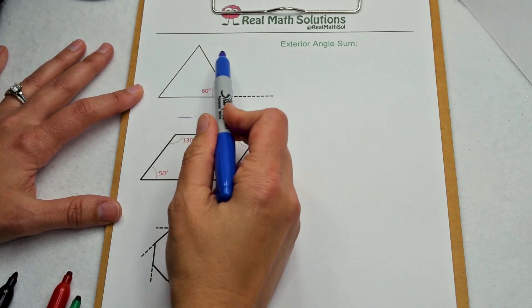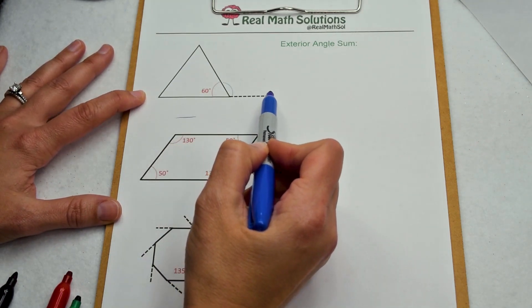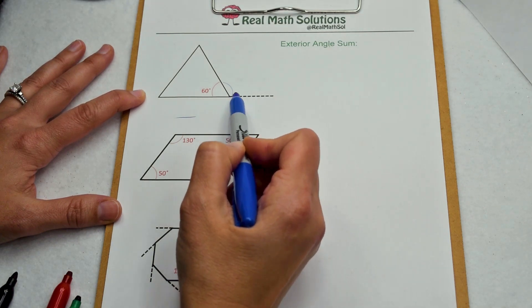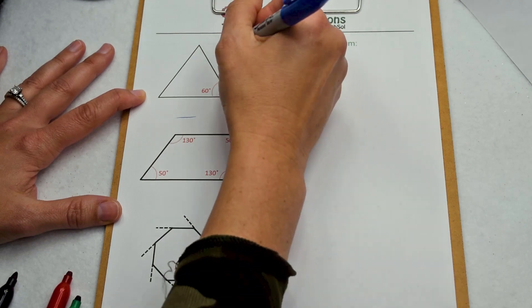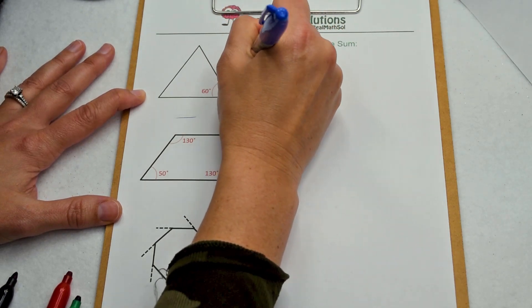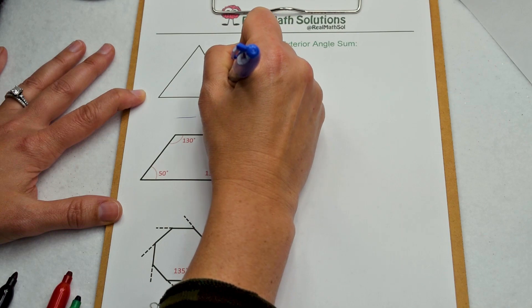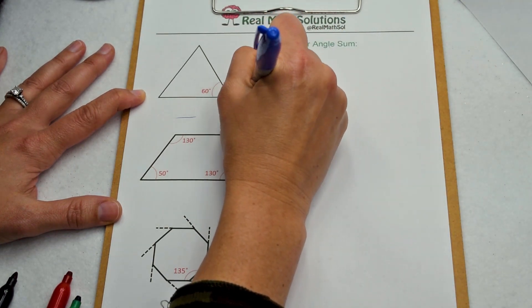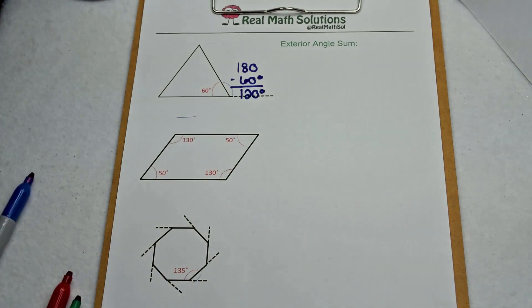Let's start with an equilateral triangle. Here we've extended our base to create its exterior angle. We'll notice that the exterior and the interior angle are supplementary. That means, combined, they make a straight line. To find the exterior angle, I can subtract from 180 because a straight line is worth 180 degrees. 180 minus 60 means our exterior angle is worth 120 degrees.